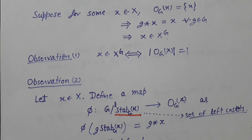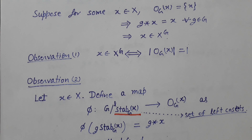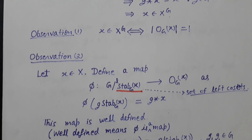Since a single coset can be represented by different elements, we need to show that if g₁ and g₂ are two representatives of the same coset — meaning g₁·Stab_G(x) equals g₂·Stab_G(x) — then g₁ star x equals g₂ star x, i.e., φ(g₁) equals φ(g₂). This is called the well-defined property of φ. We are claiming φ to be a map, so we will prove it is well-defined and then proceed.